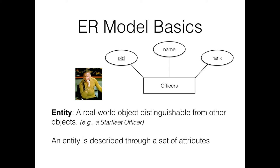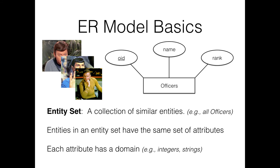If I have more than one entity, I can cluster these entities together into logical groups. I may have many different similar types of entities — Kirk, Spock, and McCoy, for example, are all examples of officers. All of them are going to have some officer ID, some name, and some rank. We call this an entity set. Each attribute can be selected from what's called the domain — for example, officer IDs might all be integers, and names might be all strings.